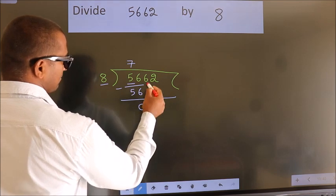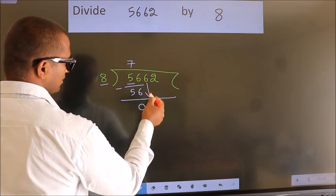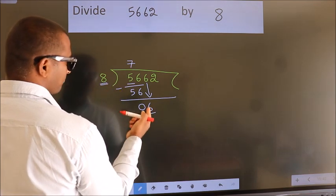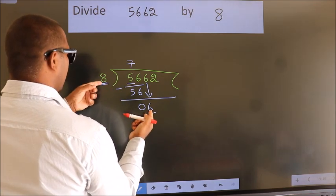After this, bring down the beside number. So 6 down. Here we have 6, here 8. 6 is smaller than 8.